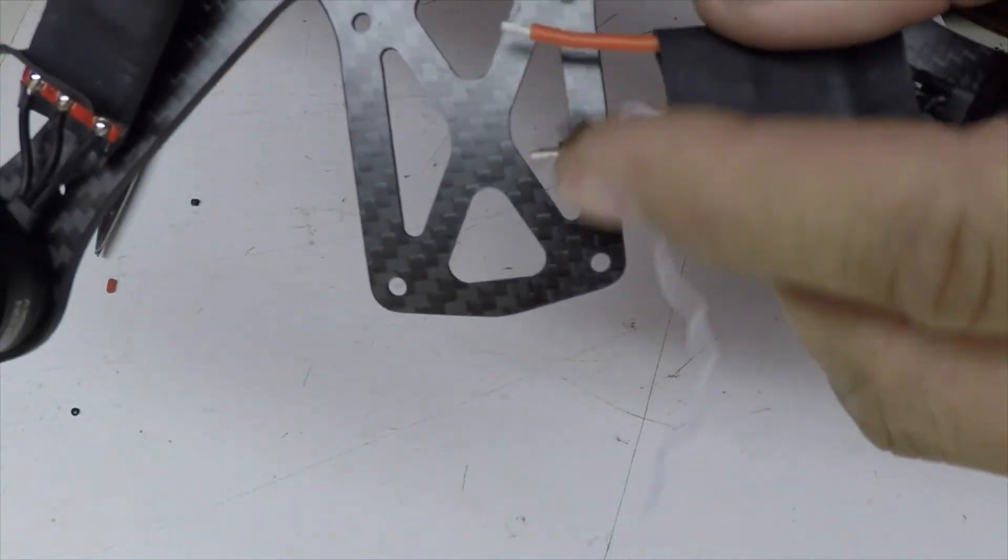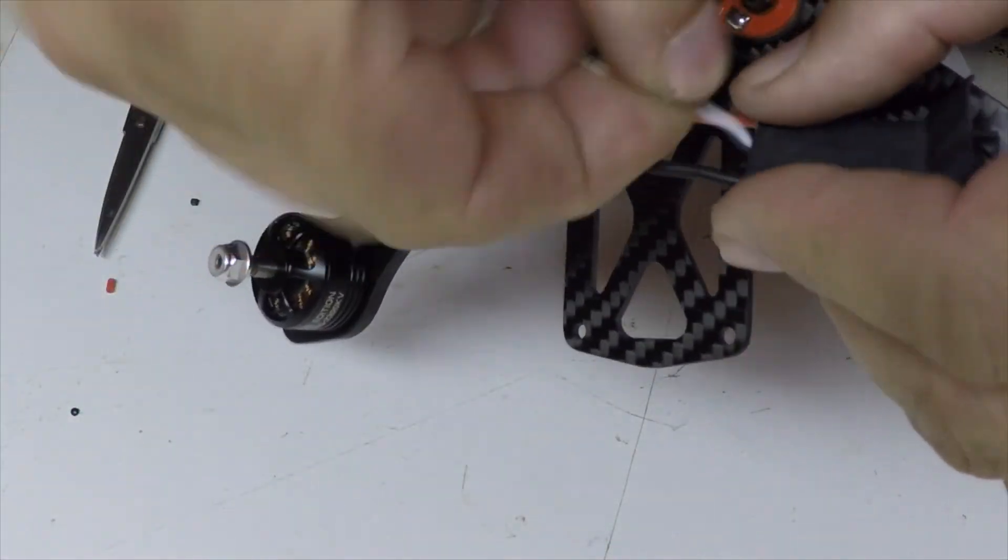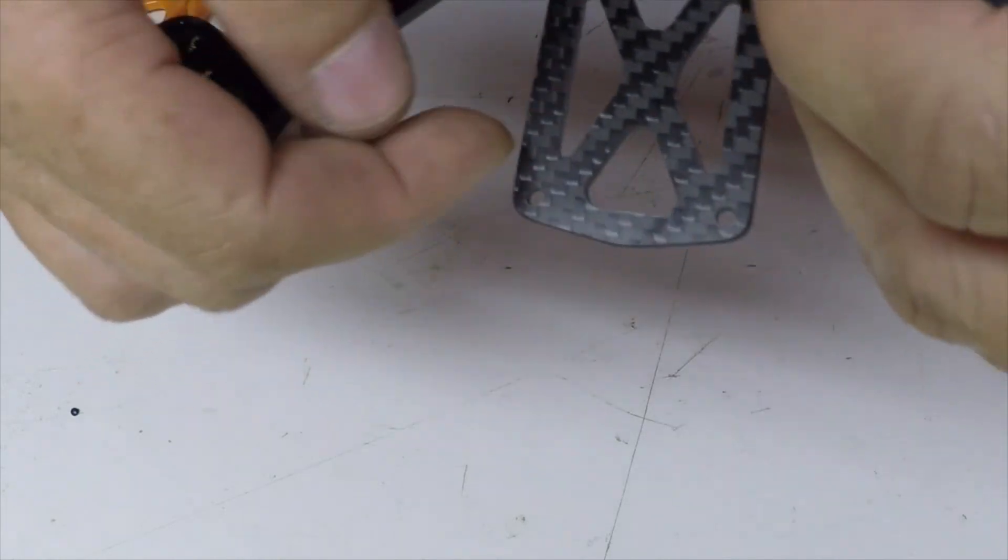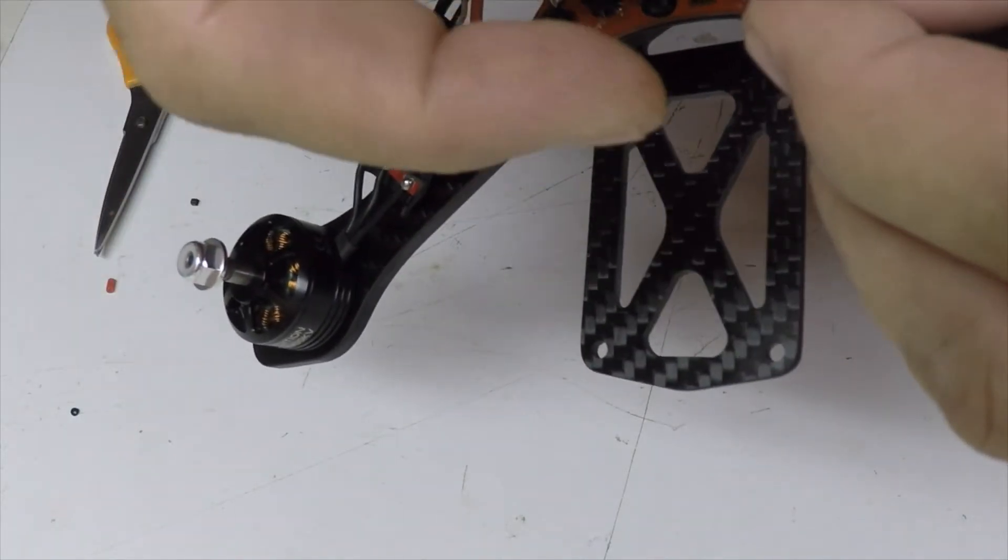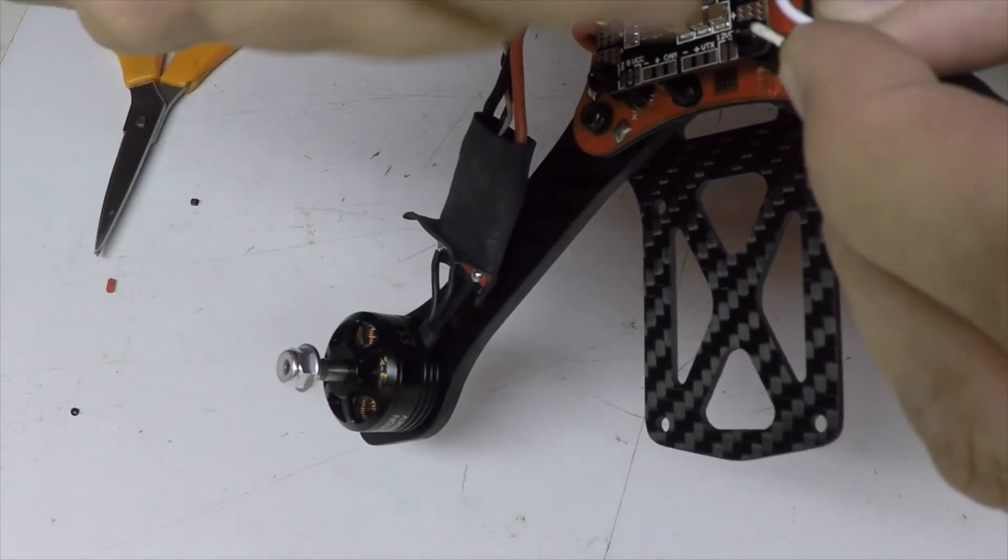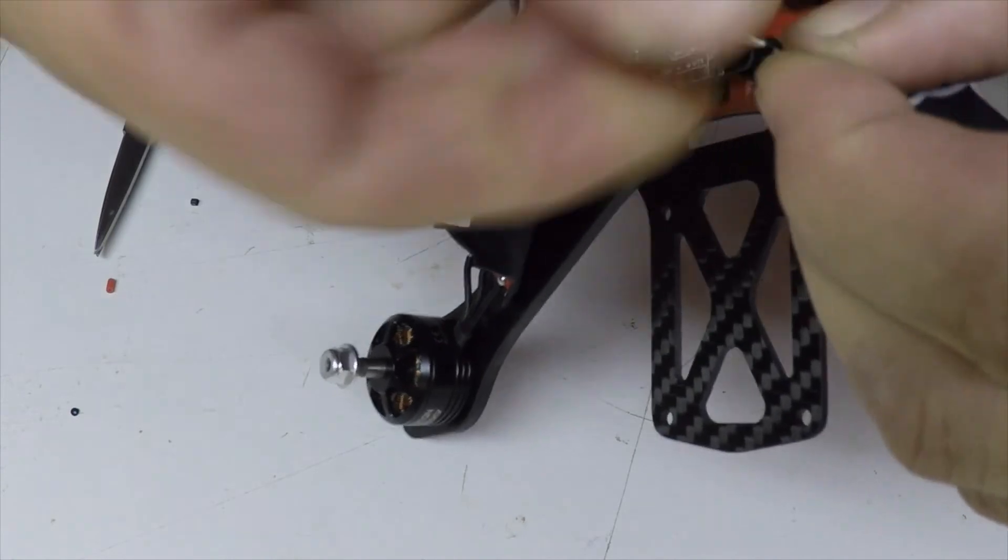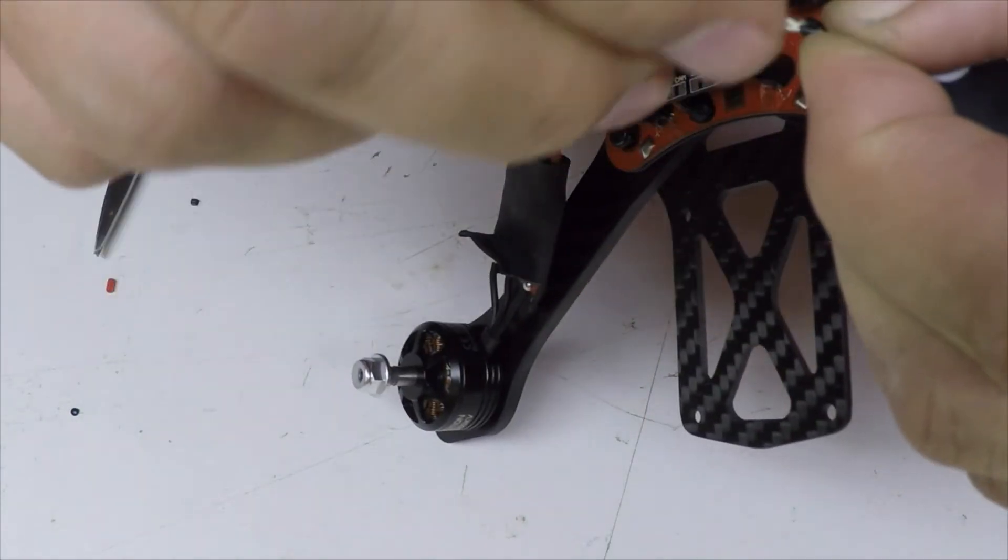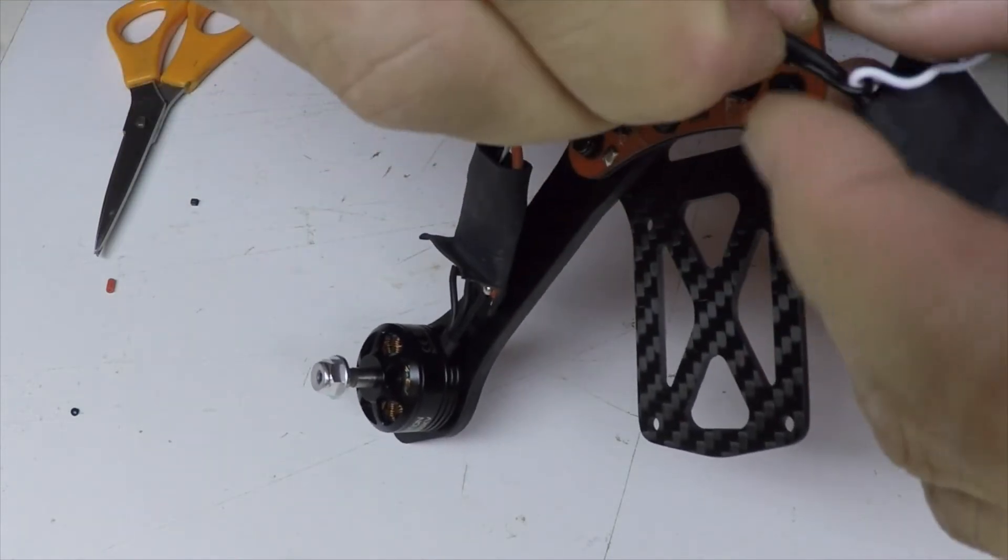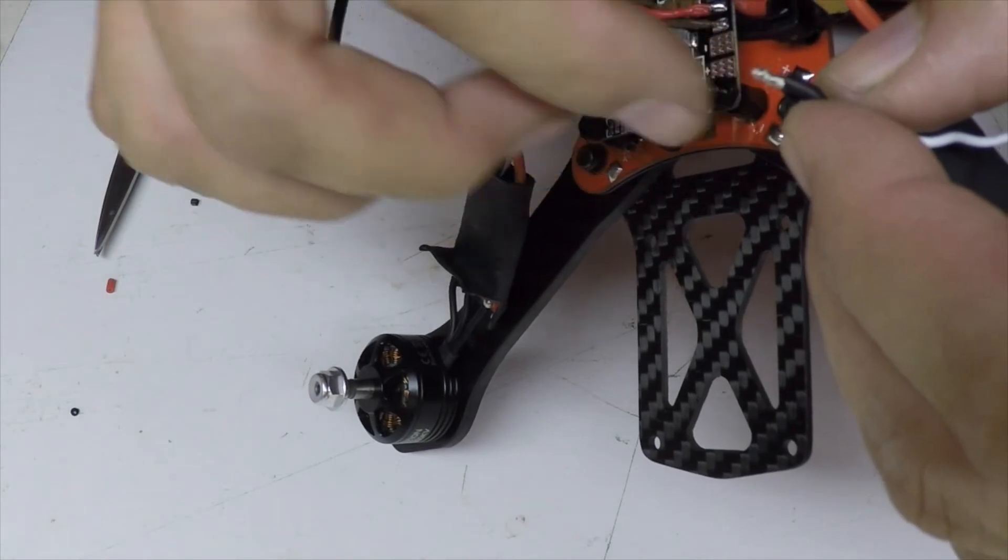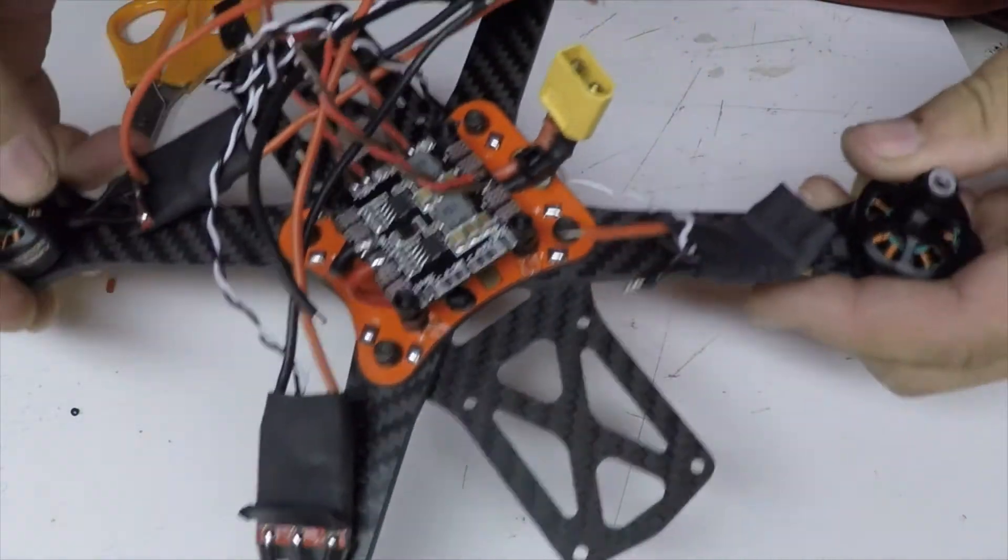I've got it about like that. And then what I'm going to do, twist these. I'm going to do all four speed controls this way. Then this ground, I'm going to twist right in with the ground of the speed controller. About like that. Just wrap it around there. And then when I tin that, it'll just be one piece that I need to solder to the power distribution board. When my iron heats up, I'll tin that up.